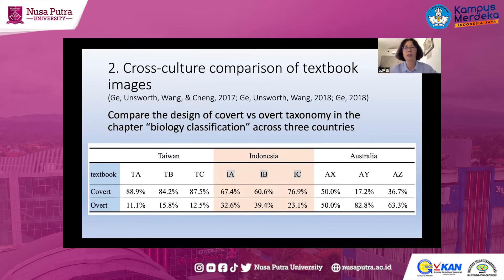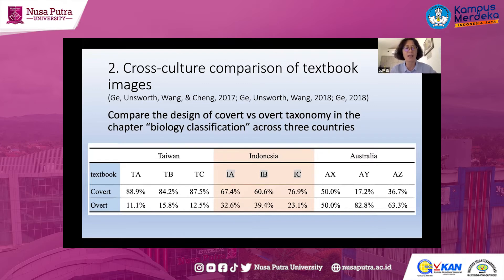Now we move on to the cross-cultural comparison of textbook images. I compare the design of overt and covert taxonomy in biology classification chapters across three countries: Taiwan, Indonesia, and Australia. I selected the three most popular textbooks as samples — for Taiwan: TA, TB, TC; for Indonesia: IA, IB, IC; for Australia: AX, AY, AZ. From the table you can find the following results.